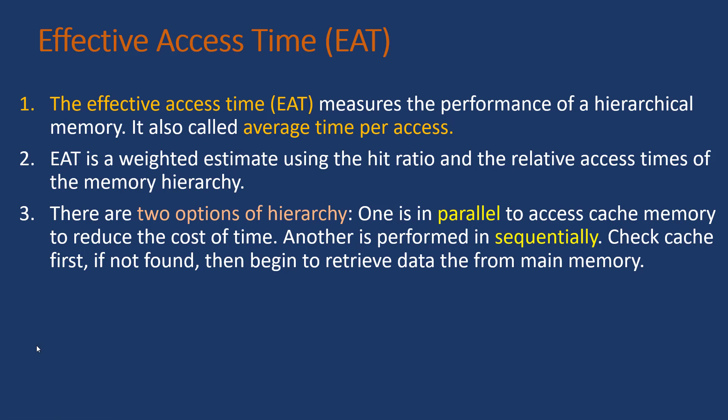EAT is a weighted estimate using the hit ratio and relative access time of the memory hierarchy. Since different memory has different levels of cache, if data is found at one level, you do not need to look at another level. If not found, you look at the higher level of cache to find your data. So the hit ratio is used to estimate the time.